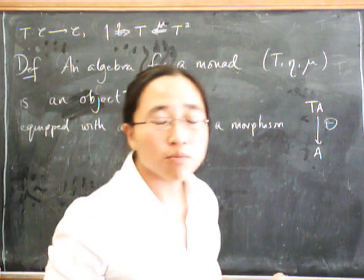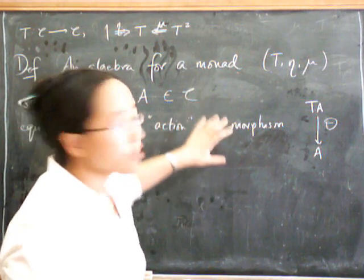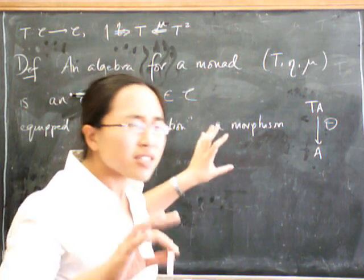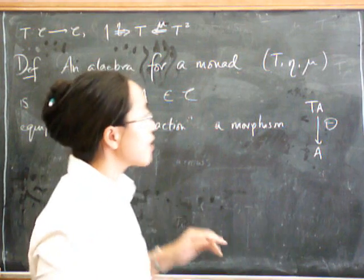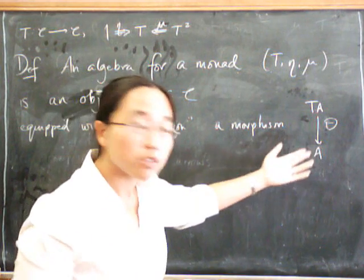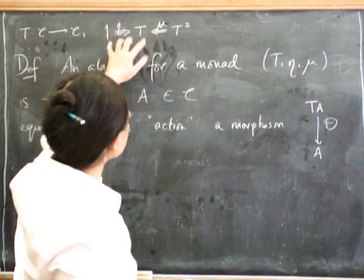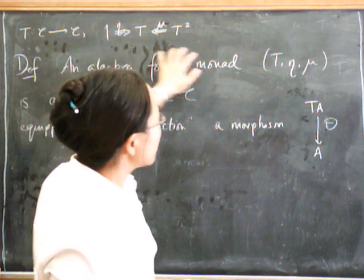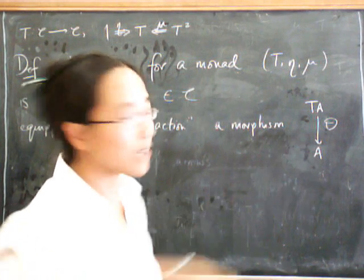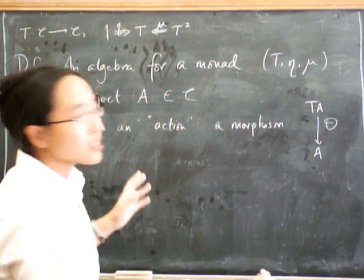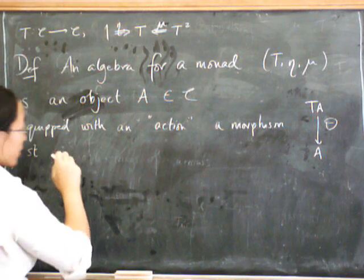We'll look at that a bit more in a minute, but of course there've got to be some axioms. Let's think about what the axioms should say. When you're hard-core in category theory, you'd just say 'satisfying the obvious axioms.' So how do we see that those axioms are obvious? We've got eta and mu, and the point is that theta has to interact sensibly with eta and mu. The following diagrams have to commute.